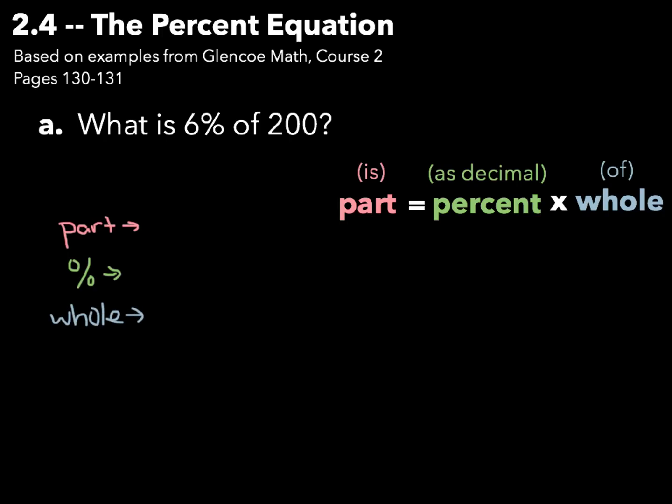We'll be given two of these three, and we need to solve for the third. So what are we given in our question?